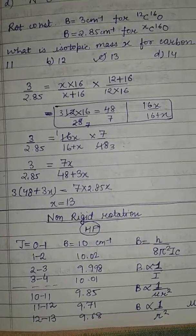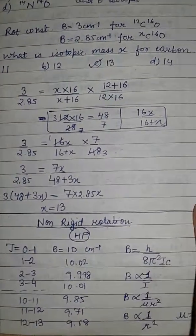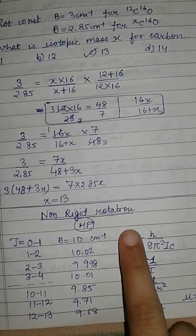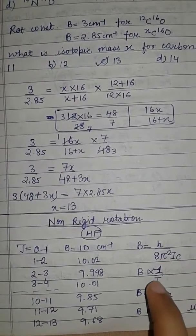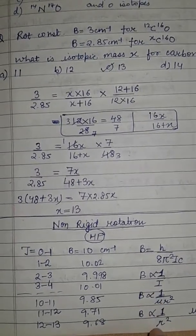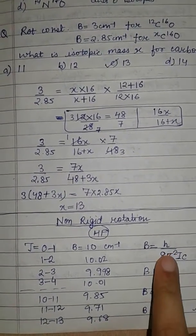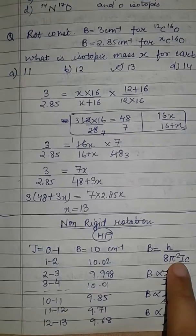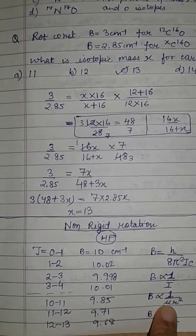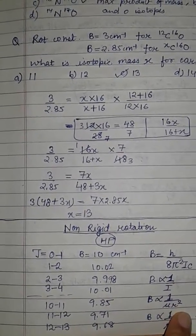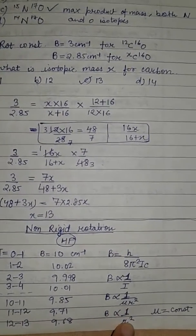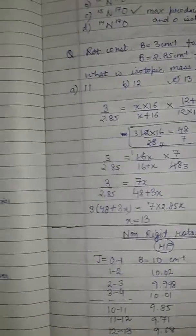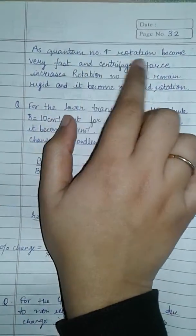We study non-rigid rotation. For non-rigid rotation, B is equal to H upon 8π²IC. We know that I equals μR², so if we take μ as constant then R will be variable. Therefore B becomes inversely proportional to R². This is called non-rigid rotation.